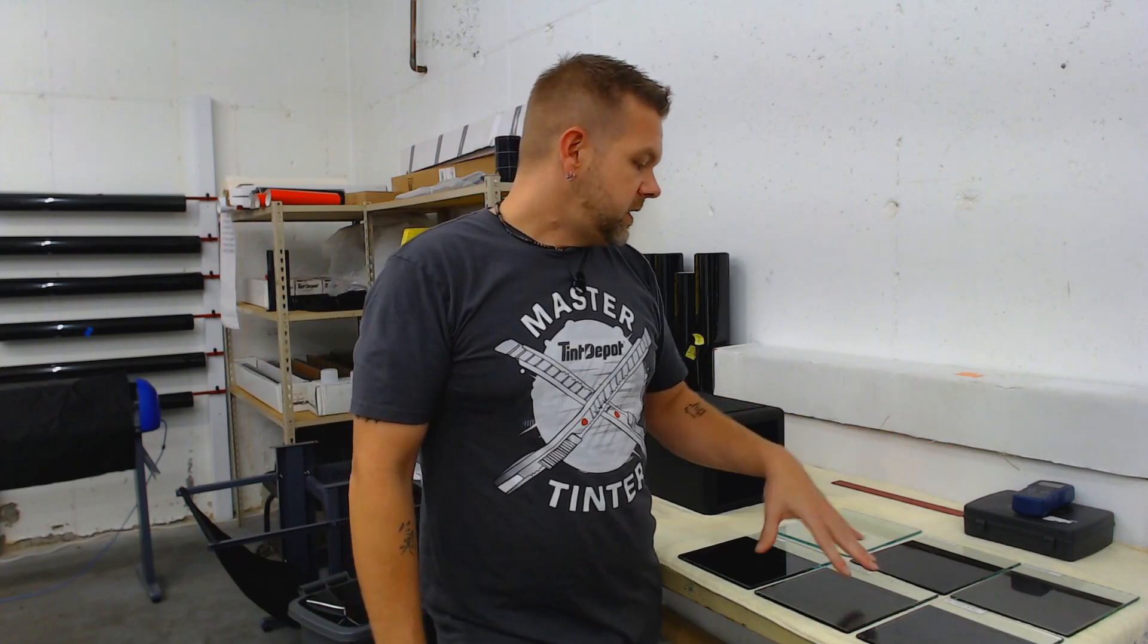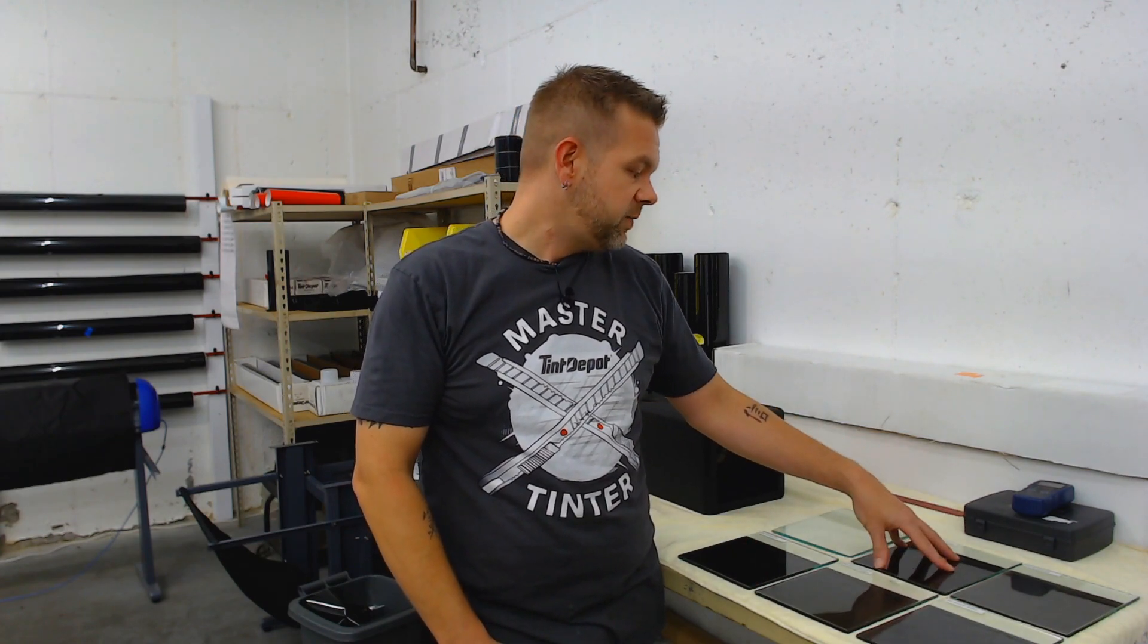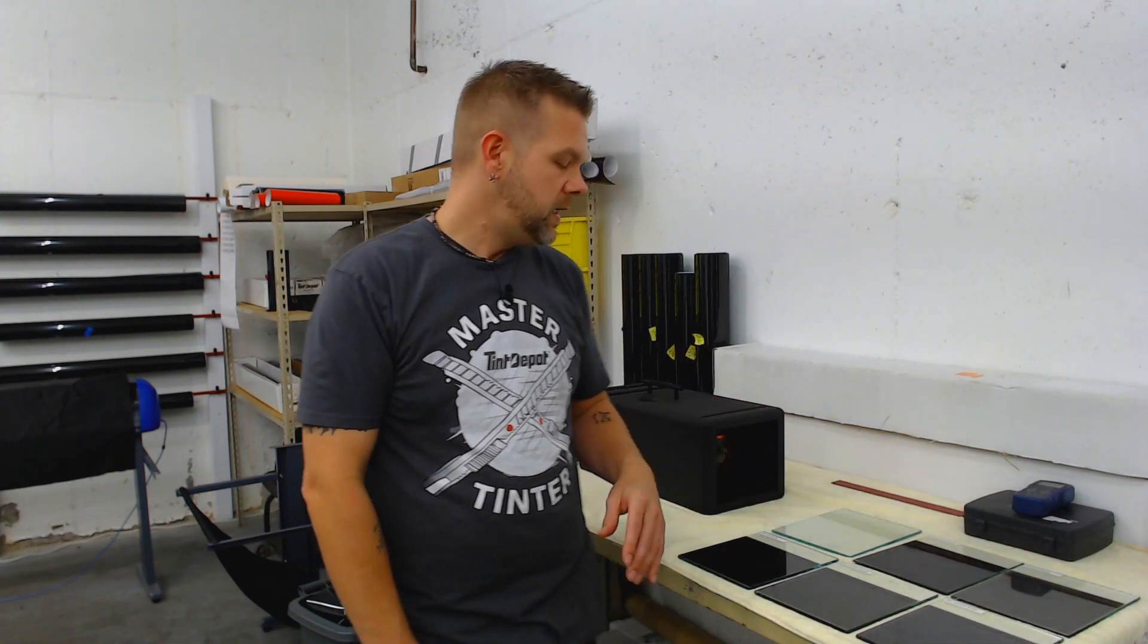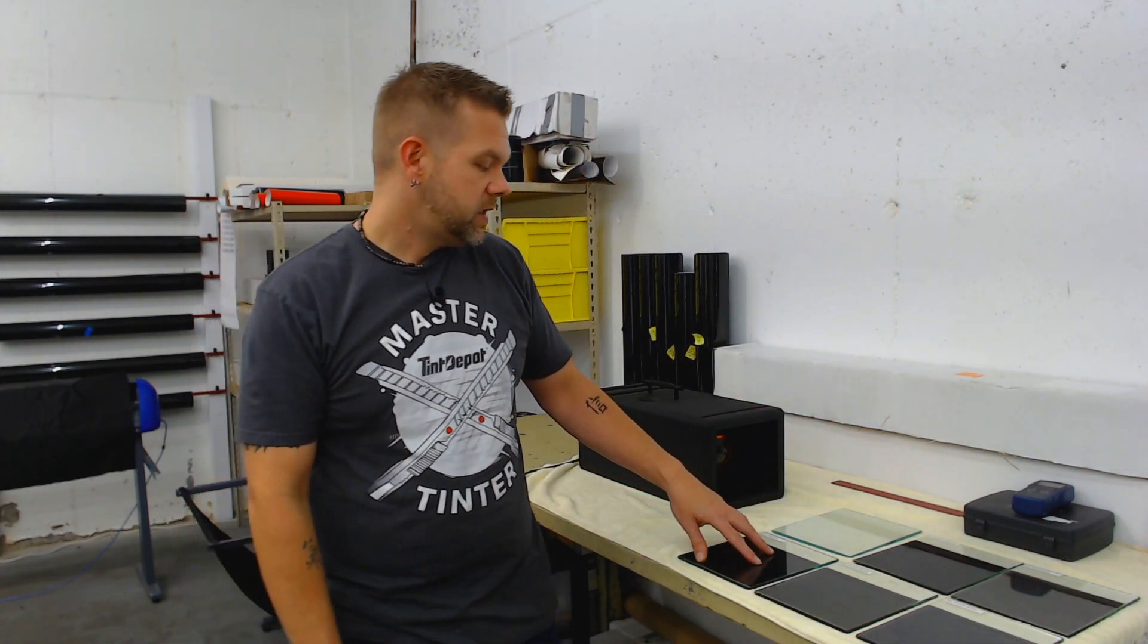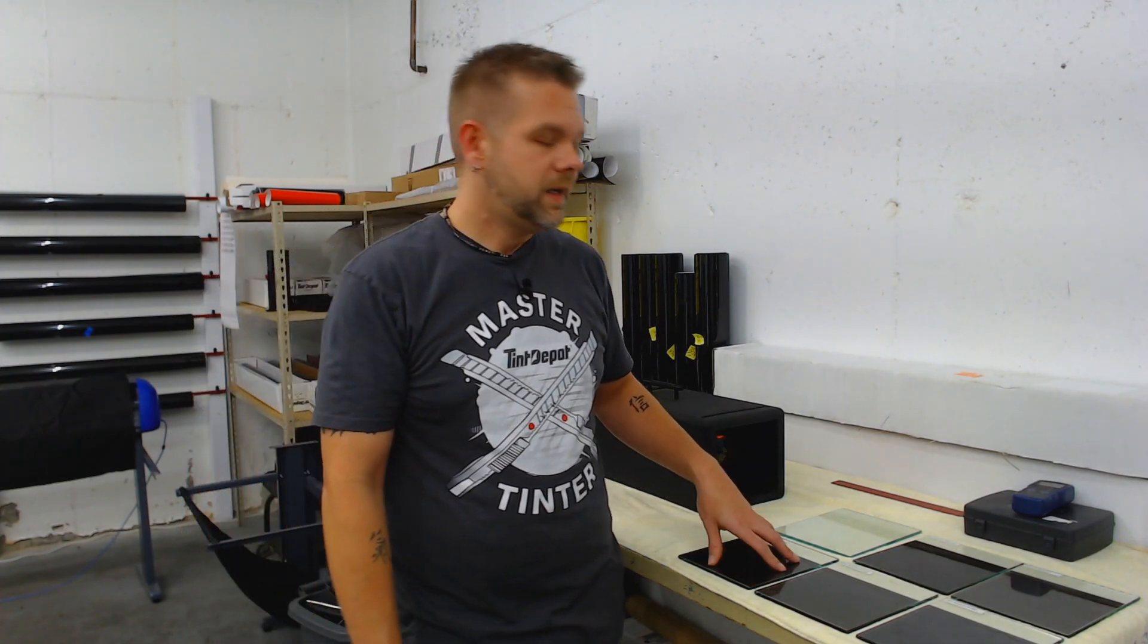We've got all of this is Tint Depot's window film, most of which I carry in stock. This is 5% superior charcoal. That's my dyed line. It's a premium line. It's a lifetime warranty film. We've got the 20% HP charcoal. Again, another premium line. It's a metalized film. So it does block a little bit of heat. We've got the 20% ceramic IR, which is a fairly new film. I've worked with it a little bit. I like it. This is the good, better, best lineup, by the way. This is the better.